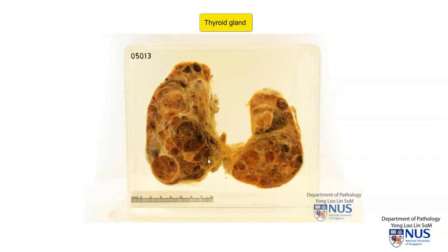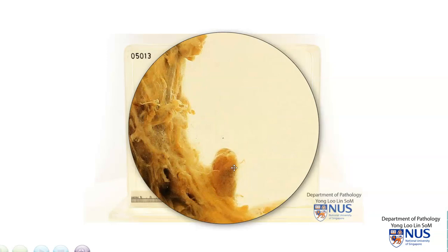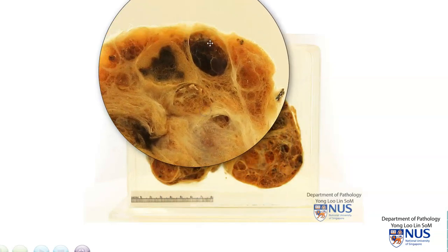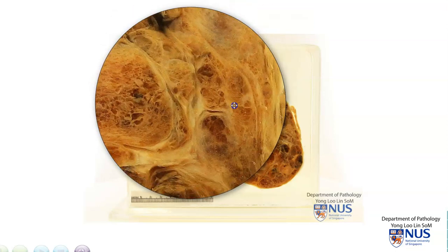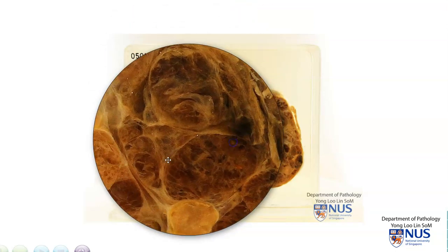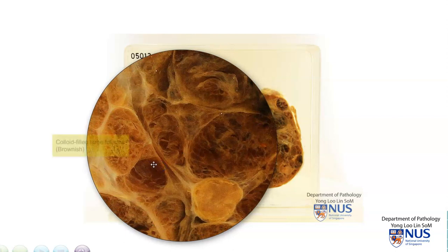The cut surface shows multiple nodules involving both lobes, and they are of different sizes. Some of the nodules have darker areas of hemorrhage, and other nodules are paler in color, and in some areas you can see this brownish color. This is because there is abundant colloid within enlarged dilated follicles.